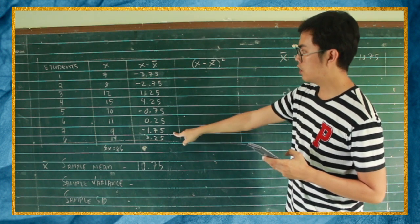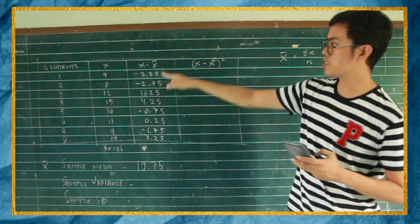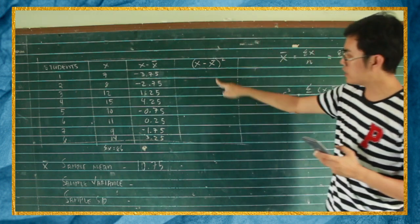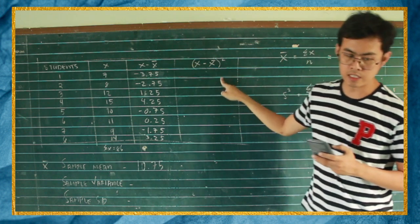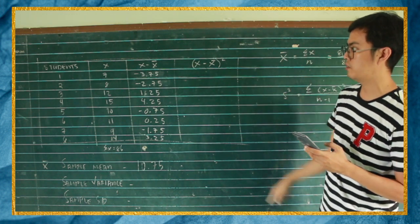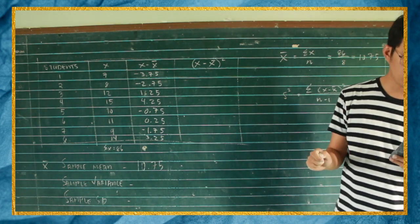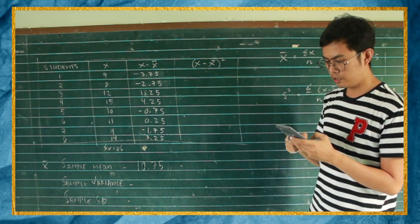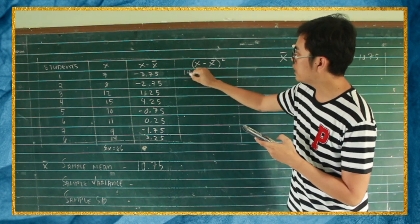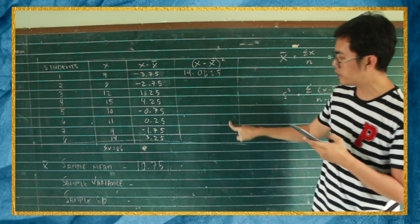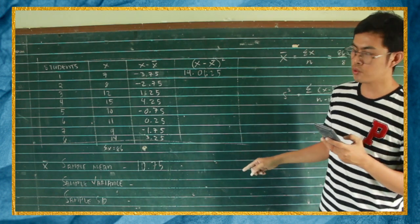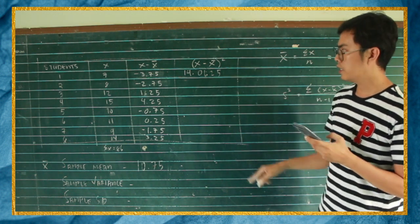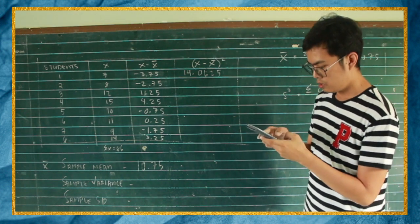Next we have to square the value na dito sa column na to. So dito maka-encounter tayo ng mga negative numbers, kasi possible na mas mataas ang mean kumpara dito sa score nila kaya magiging negative. Pero pagdating sa column na to since naka-square siya, kahit negative yan magiging positive. It means sa column na to wala akong makikita ng negative numbers. So negative 3.75 multiplied by negative, so in rule of multiplication magiging positive siya. So 3.75 square, so that would be 14.0625.